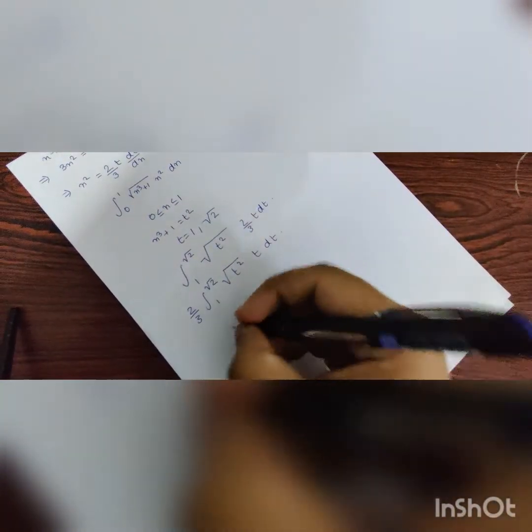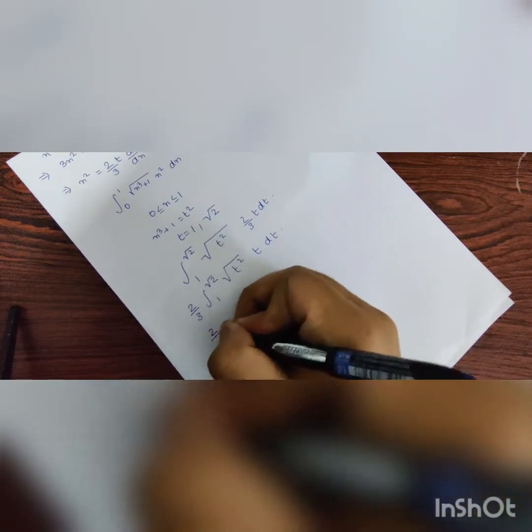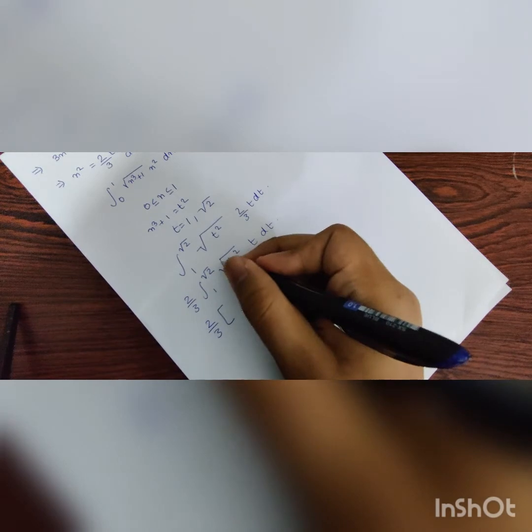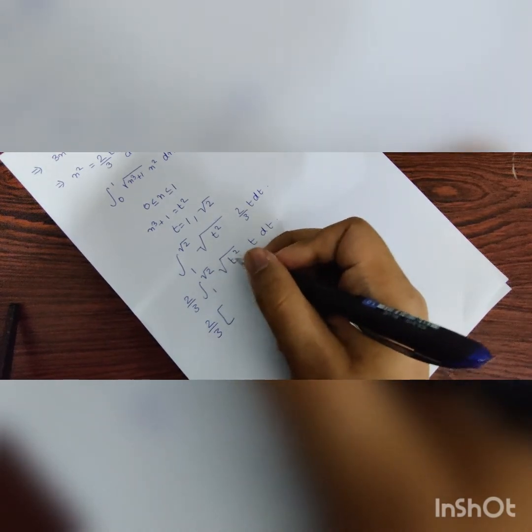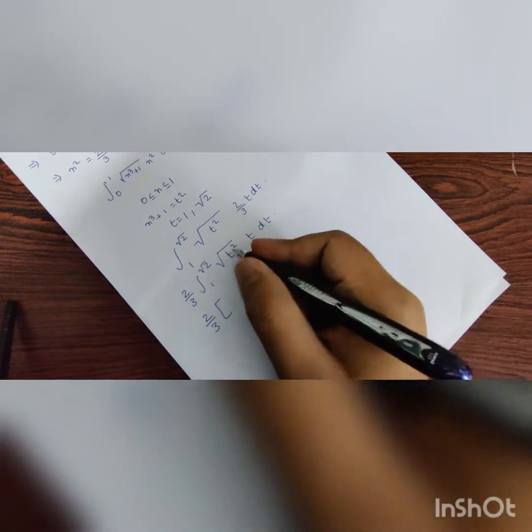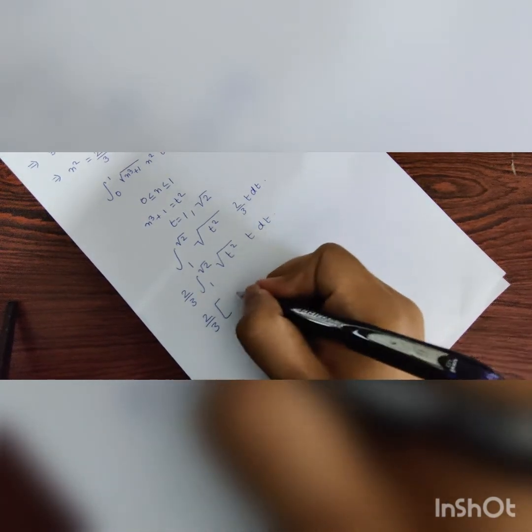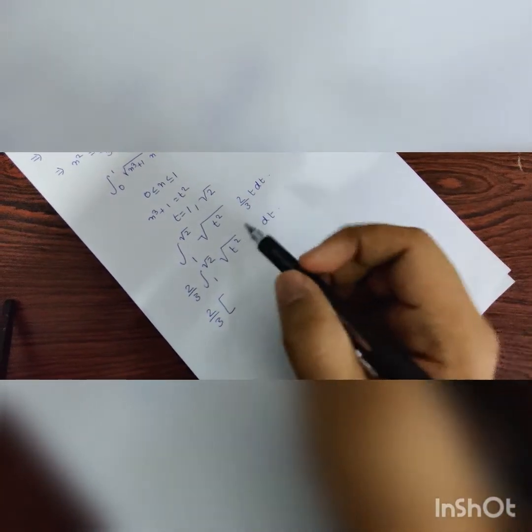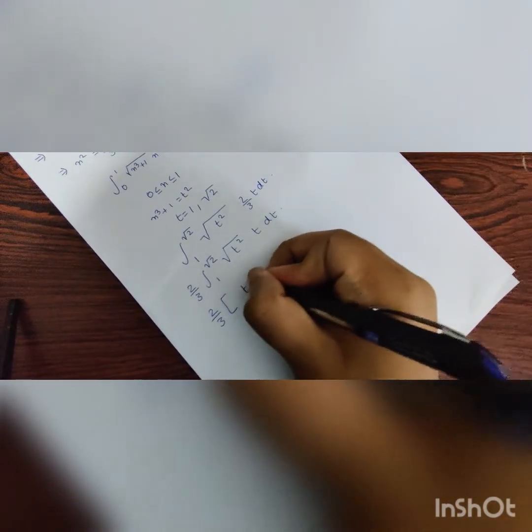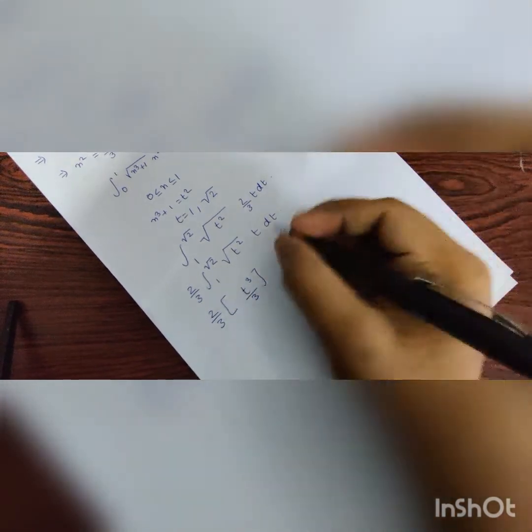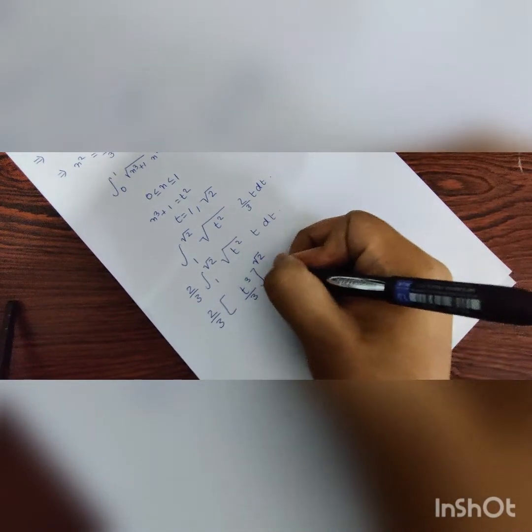Now, integrating this, 2/3 is outside, square root t and t squared will become t, and then t times t is t squared. And when we integrate that, it comes out to be t³/3 from 1 to square root 2.